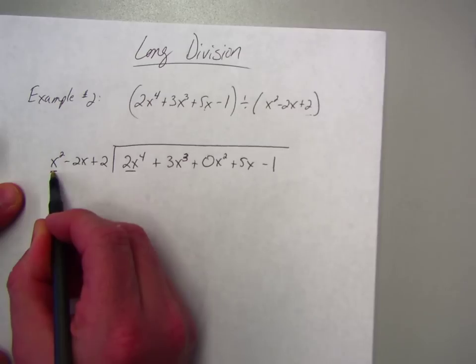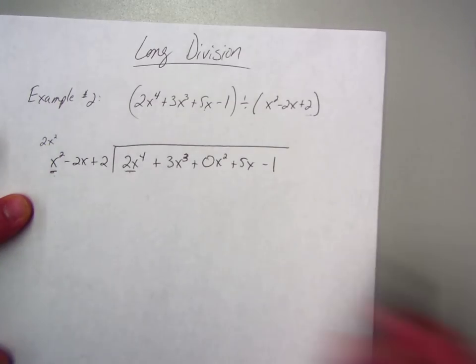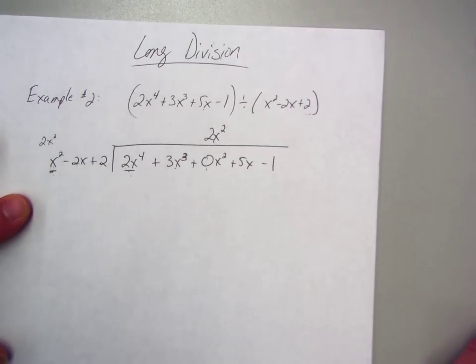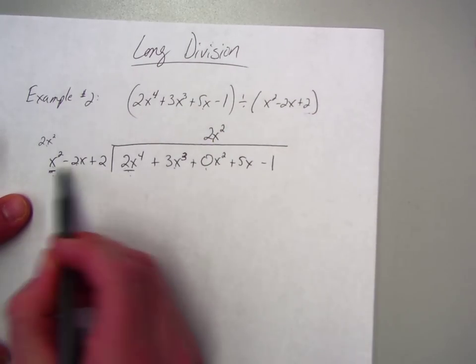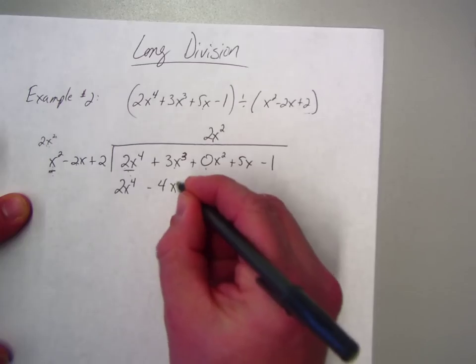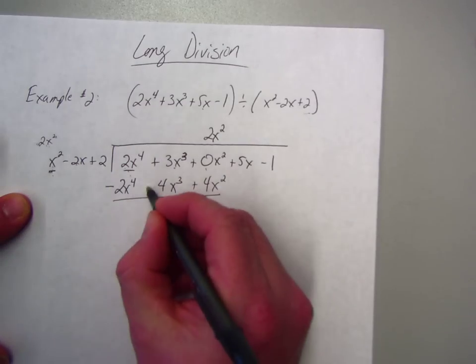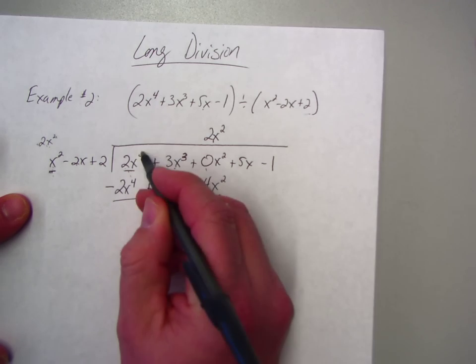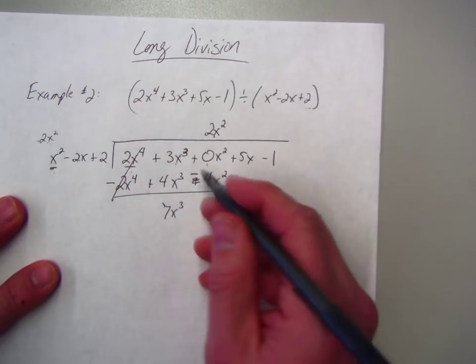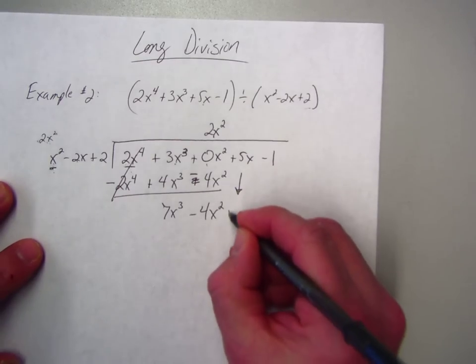So, again, just as before, you look at the first terms. What can I multiply by x squared that would give me 2x to the 4th? So, that would be 2. I can multiply by 2x squared. Now, it gives me 2x to the 4th. So, I've got 1, 2, 3. And I put the 2x squared right here. Now, I'll take the 2x squared and I'll multiply through. So, 2x squared times x squared is 2x to the 4th. Minus 4x cubed. Plus 4x squared. I'm subtracting. So, I change the signs. So, that gives me 0. Which you always want. Here, I get 7x cubed. And then, I get a negative 4x squared. Now, I have 2 terms here. I'm dividing by 3 terms. So, that means I must bring down the next term.